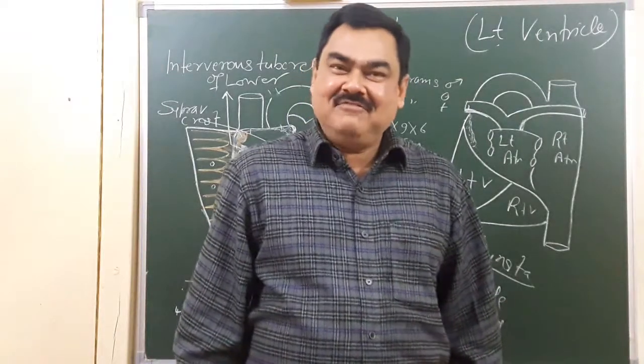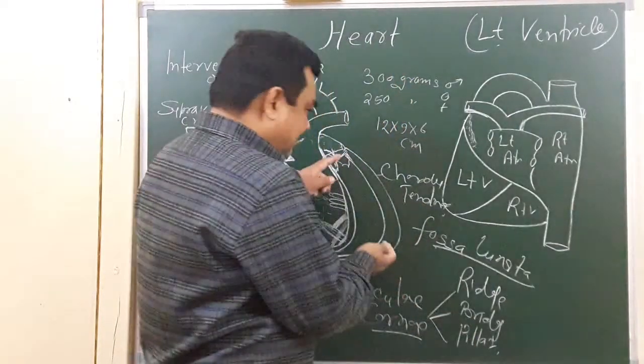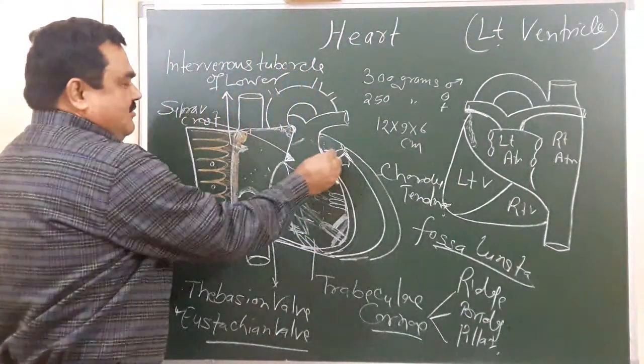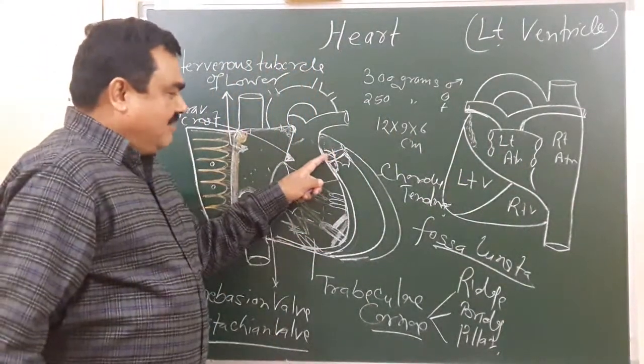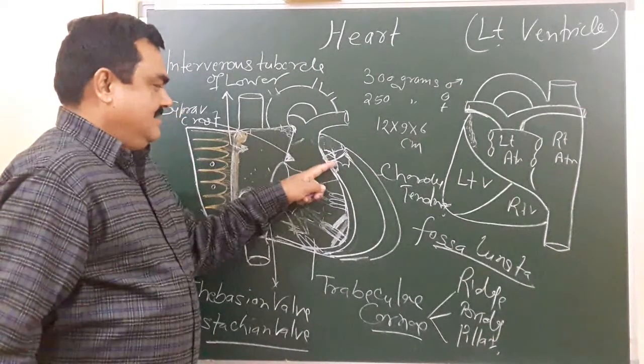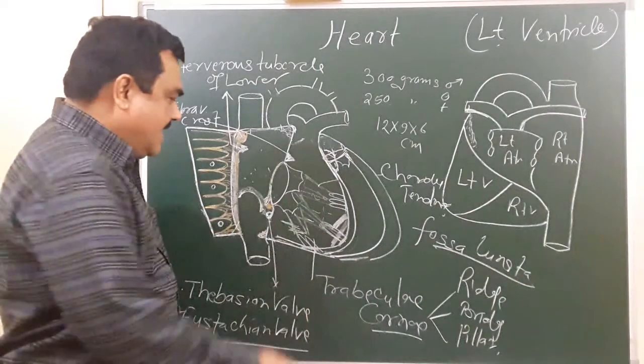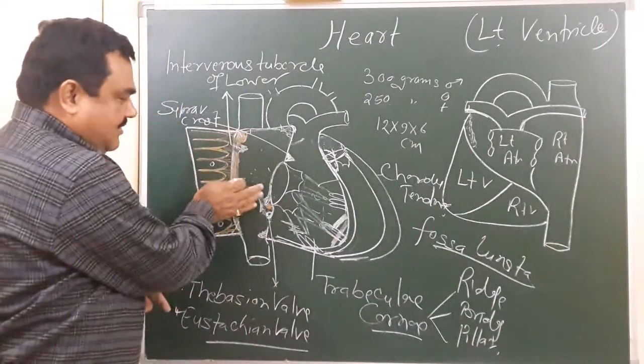Now we'll discuss the left ventricle. This chamber is the left ventricle here. You can see this is the atrioventricular orifice, and this chamber also, like the right ventricle,